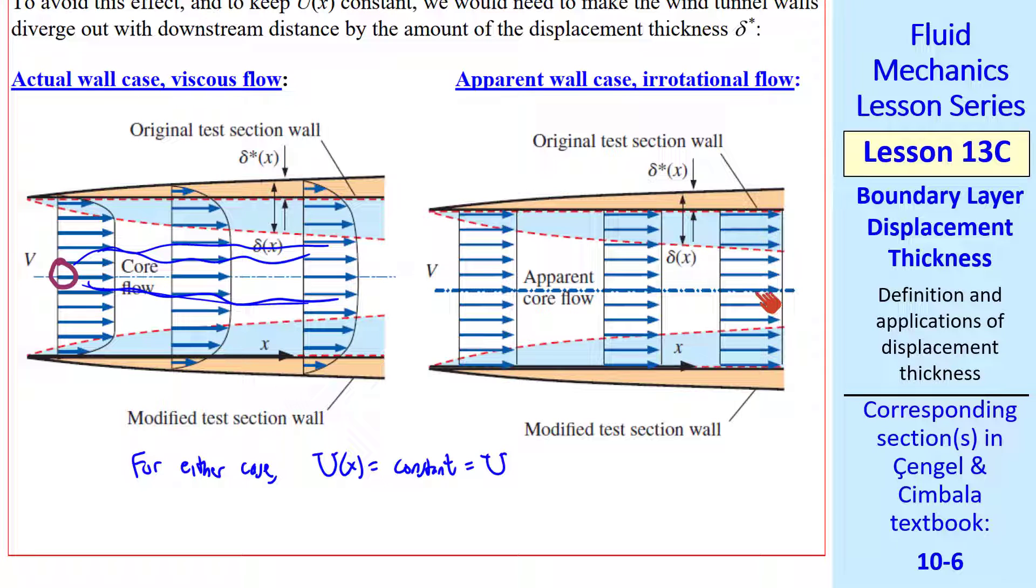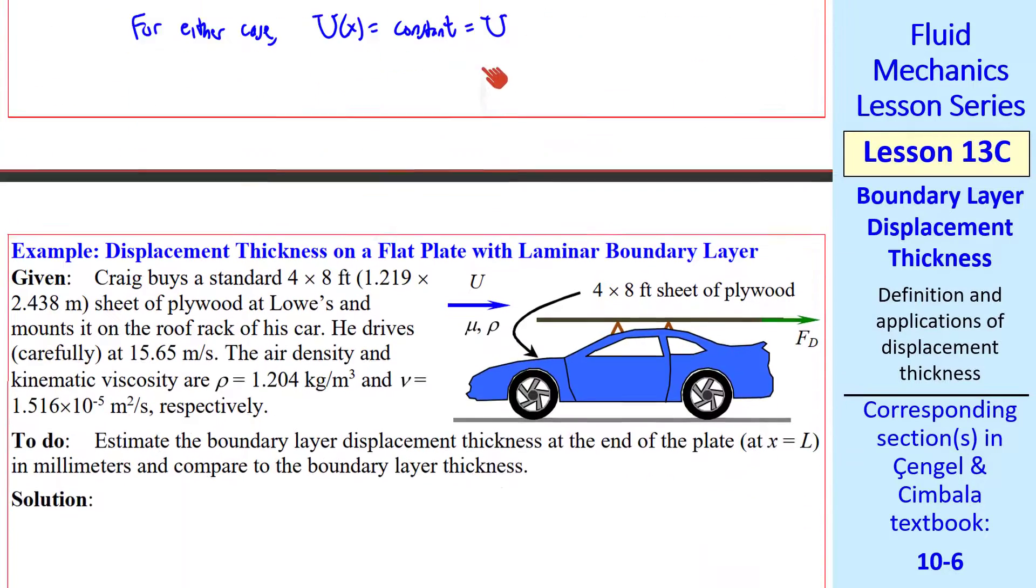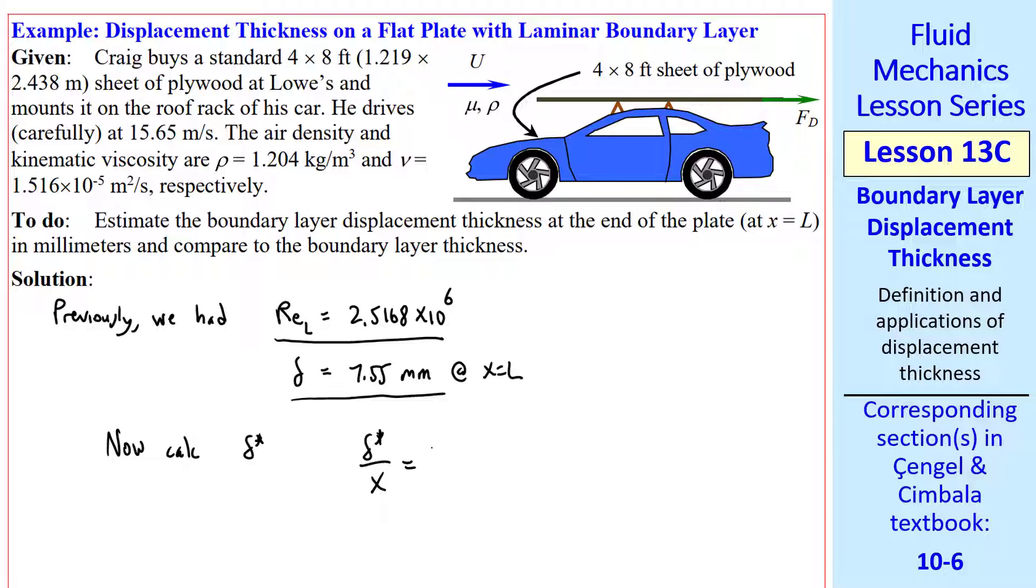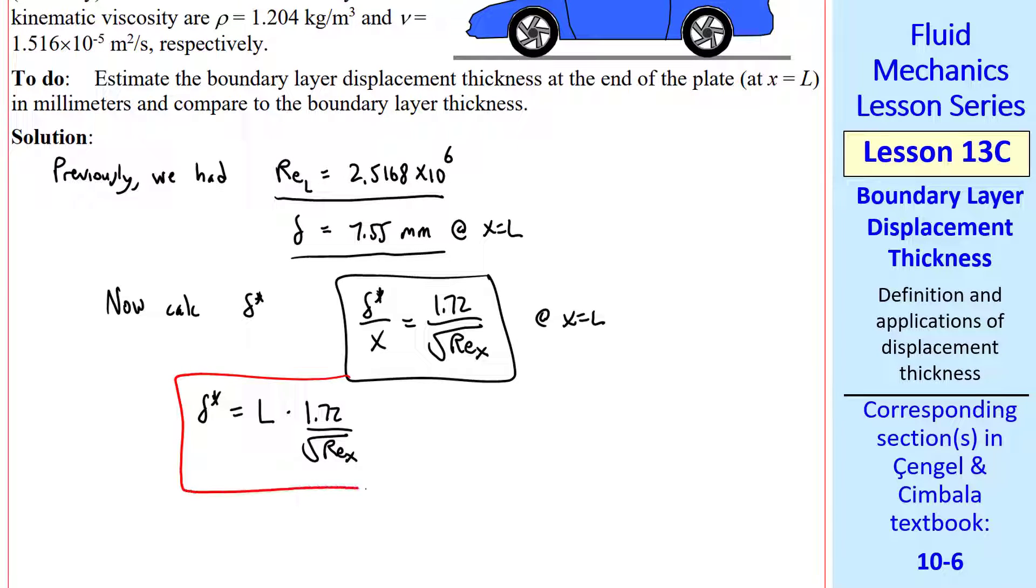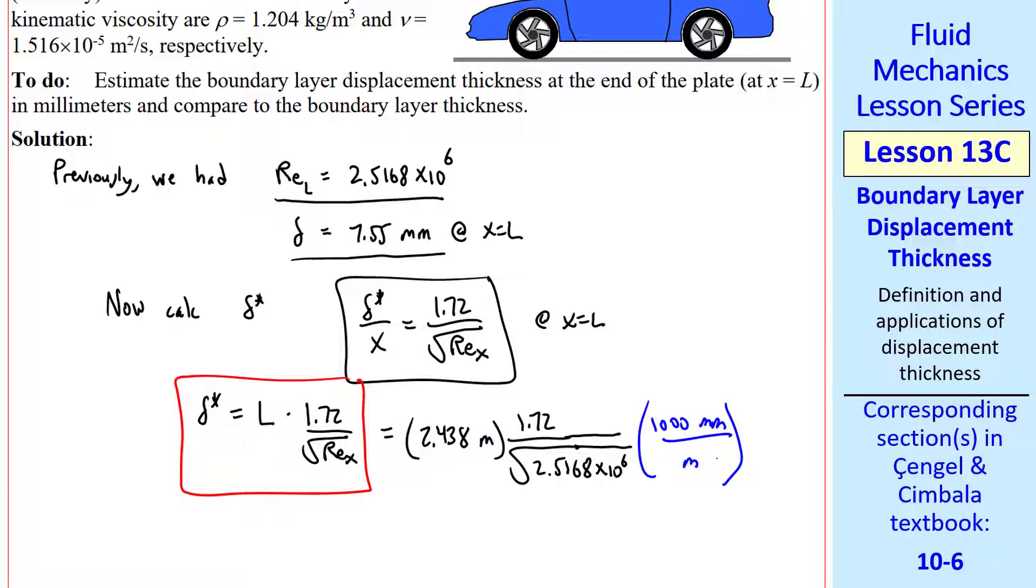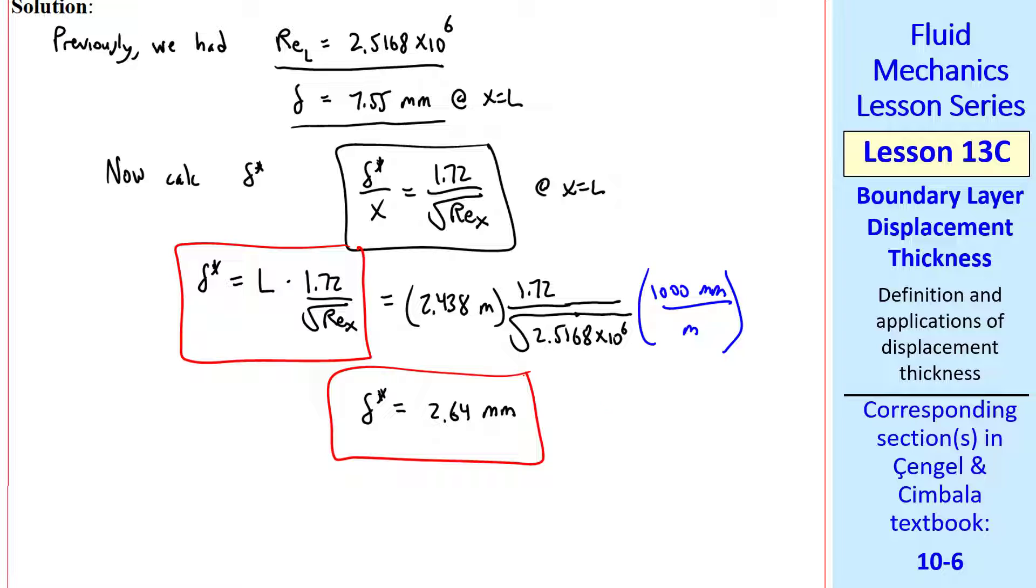Let's do some example problems. This is the same example problem we had in the previous lesson, where Craig is driving home with this 4 by 8 sheet of plywood on his roof rack. Previously, we calculated Reynolds number at the end or trailing edge of this plate. And we calculated delta, the boundary layer thickness, at the end of the plate. Now we're asked to calculate delta star, the boundary layer displacement thickness, at x equal l. We use the equation from above and apply it at x equal l. So this is our displacement thickness in variable form. We plug in the numbers, l and Reynolds number, and convert to millimeters. And we get delta star equal 2.64 millimeters. Notice that this is less than delta by about a factor of 3. We also commented in the previous lesson that this Reynolds number is too high for laminar flow. In the next lesson, we'll repeat these kind of calculations, but for turbulent flow.